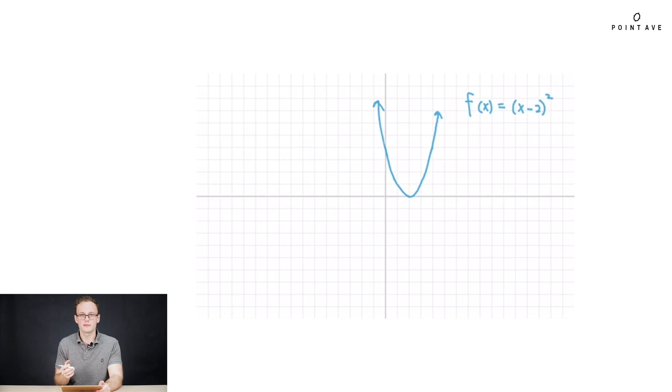So let's break down where this comes from, this x minus 2 squared. First off, why, if we're moving positive 2 to the right, would we have negative 2 in the equation? Well, let's break it down by looking at a point.